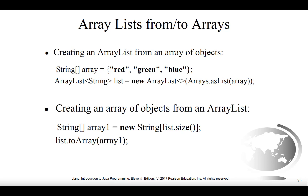So now we have an ArrayList of strings containing those same three elements. At index 0 we have the string red, at index 1 the string green, and at index 2 the string blue — all the same elements that were in the original array, but now in an ArrayList called list.